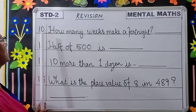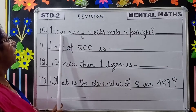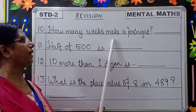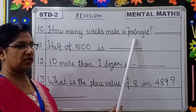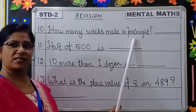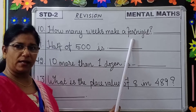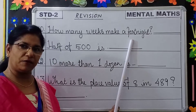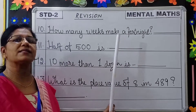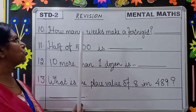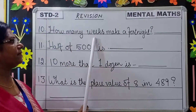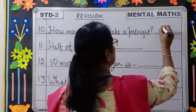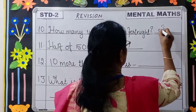Next question, question number 10: How many weeks make a fortnight? A fortnight is 14 days. How many days in a week? 7 days. So 7 plus 7 is 14. So how many weeks? 2 weeks.